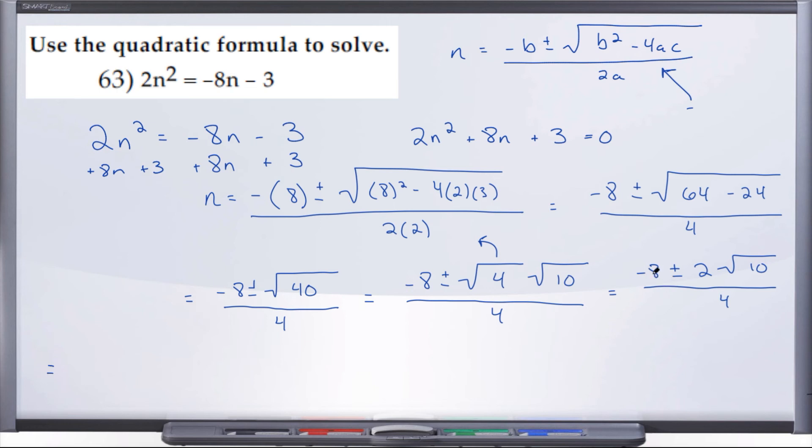So what we can do is -8 / 4. Let's split this up into -8 / 4, and then we'll have ± 2√10 / 4. And so what we'll end up with is -8 / 4 is -2, ± √10 / 2.